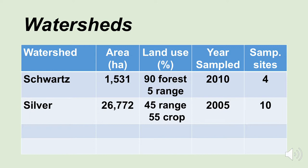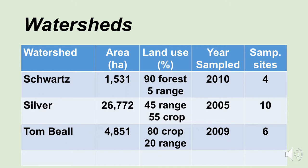Finally, we had Tom Beall Creek watershed — only 4,800 hectares, a much-studied watershed. It was 80% cropland and about 20% rangeland. It was sampled in 2009 and there were six sampling sites.